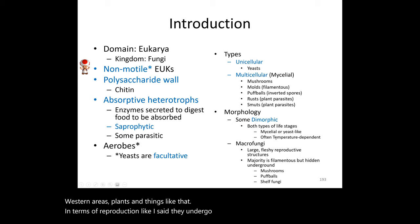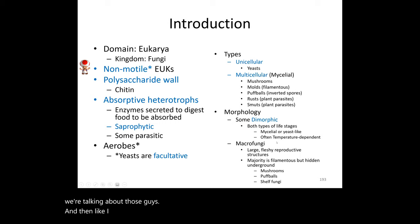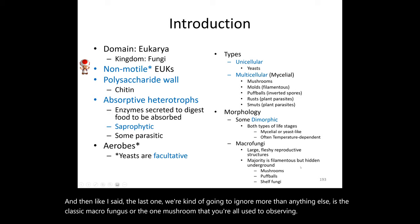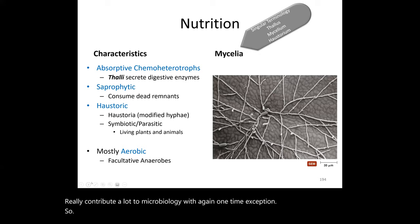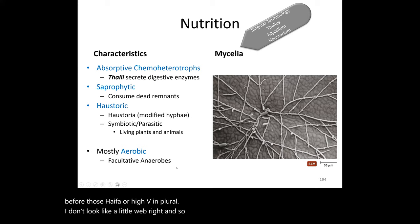Fungi can undergo both sexual and asexual reproduction — what we call dimorphic. The classic macro fungus — the recognizable mushroom — will largely be set aside, except for one example in lab. There are seven current fungal classifications we recognize, with one new group potentially being added soon but still under review.